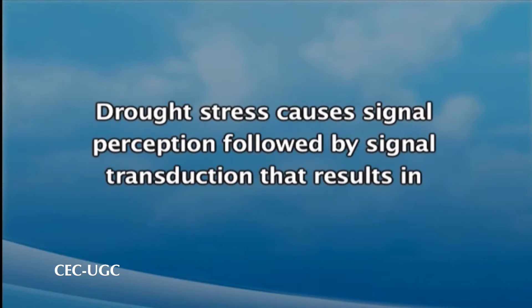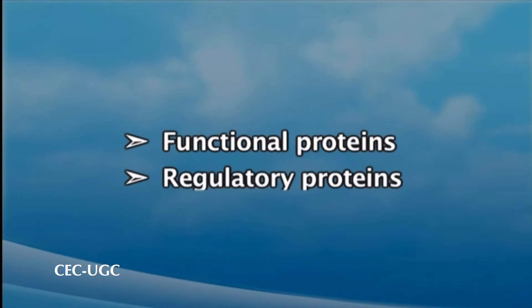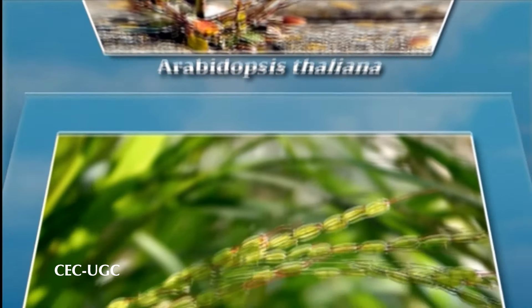All these physiological responses generally have a molecular basis. During drought stress, signal perception is followed by signal transduction that results in gene expression. The gene products can be functional proteins and regulatory proteins. Molecular control mechanisms for drought stress tolerance are based on the activation and regulation of specific stress-related genes. Many drought-inducible genes with various functions have been identified by molecular and genomic analyses in model plants such as Arabidopsis thaliana, Oryza, Setaria and other plants.